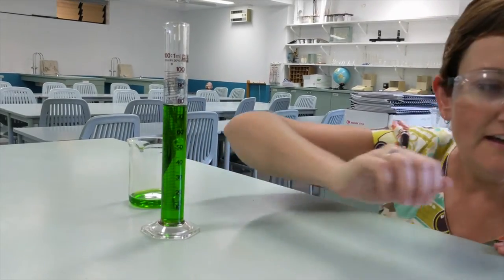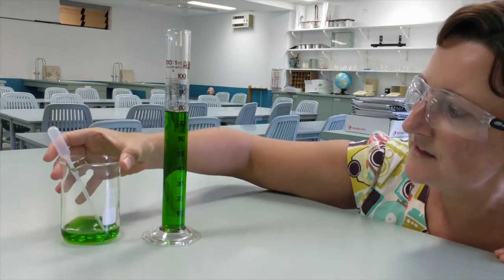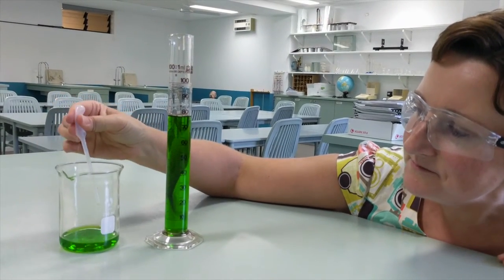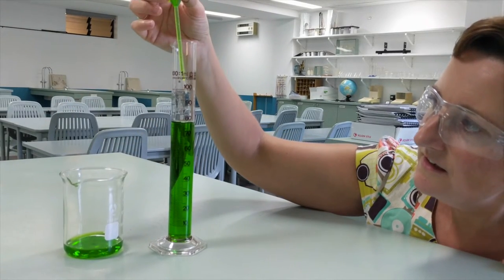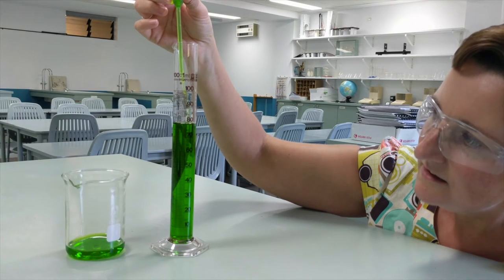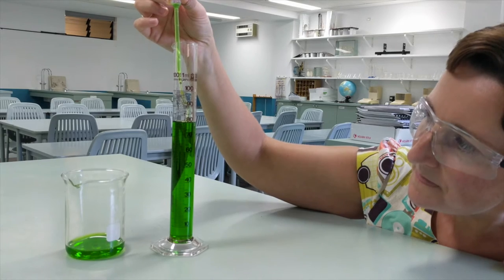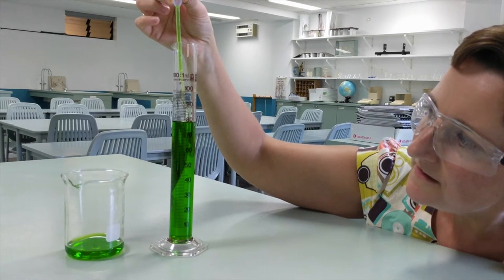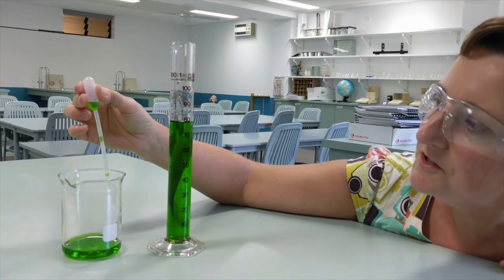In order to add more volume to our measuring cylinder, grab a plastic pipette, get some of the chemical, and then slowly add it to your measuring cylinder until the bottom of the meniscus lines up with the scale of the volume you want.